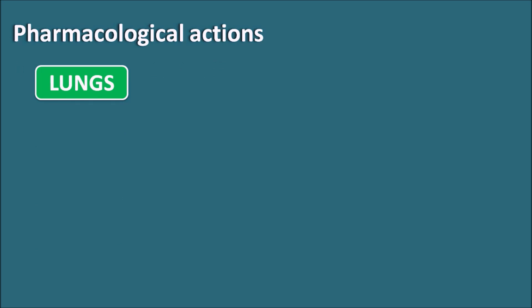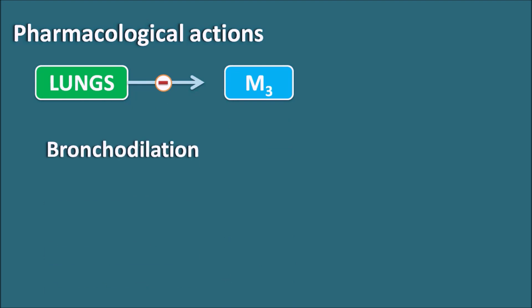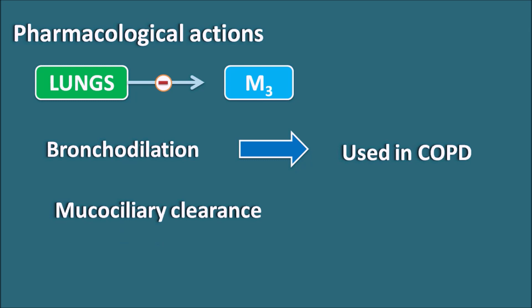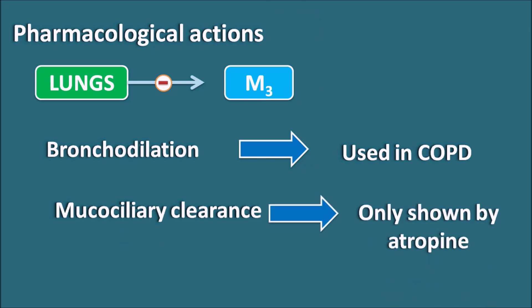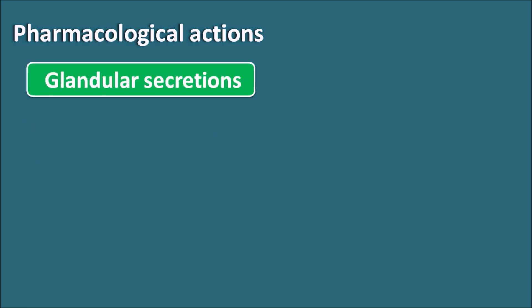Next — the lungs. Lungs are equipped with M3 receptors, and when these M3 receptors are blocked, they produce bronchodilatation. Drugs like ipratropium and tiotropium produce bronchodilatation, and they are used in the treatment of COPD — chronic obstructive pulmonary disorder. Anticholinergics can also increase mucociliary clearance, but this action is mainly observed with atropine; ipratropium and tiotropium do not show mucociliary clearance.